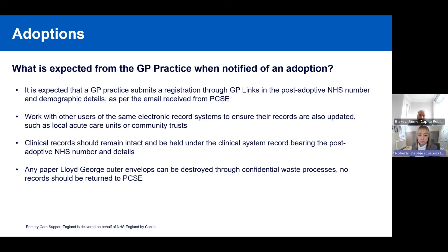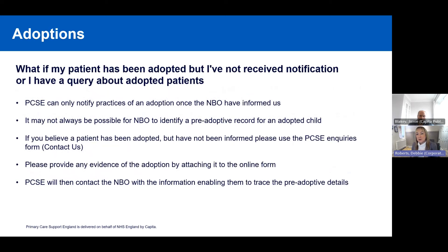If a patient has been adopted but the practice hasn't received any notification, the National Back Office will do their best to identify the pre-adoptive record, but won't always be able to. In such cases, we ask the practice to complete the online form, providing evidence that the child has been adopted. PCSE can then approach the National Back Office with that information, which will facilitate another trace, potentially find the pre-adoptive NHS number, and allow the process to proceed — after which the practice will be asked to re-register in the post-adoptive NHS number.